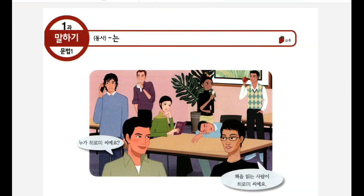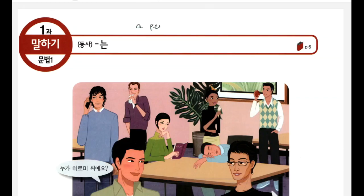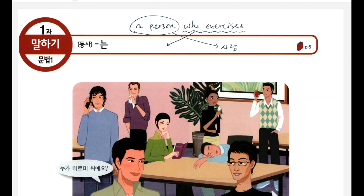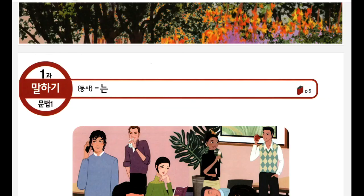Let's start with the grammar. In this video, we're learning how to modify or specify nouns. Let me take an example so you can compare the structural difference between Korean and English. For example, I want to say 'a person who exercises.' 자, base form 뭡니까? 운동하다죠? However, we shouldn't use the base form here. We have to change it into 는, as it says.